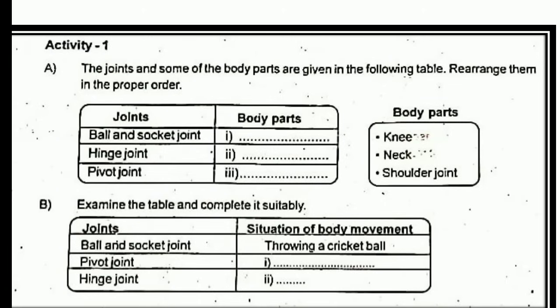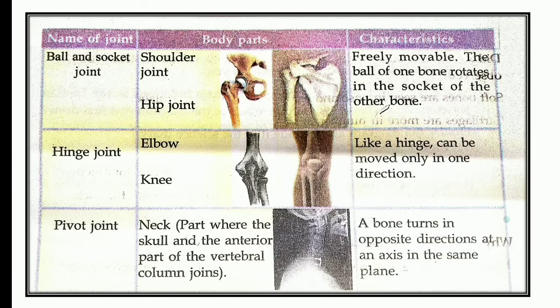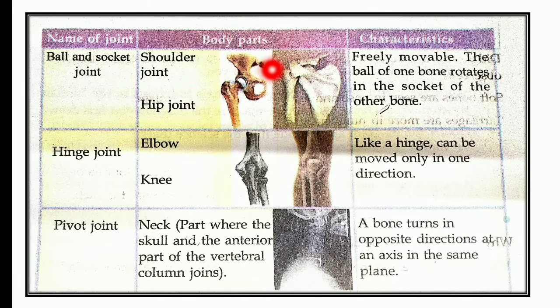Now let's talk about this question in the box. This is the ball and socket joint — shoulder joint and hip joint. These are the body parts.